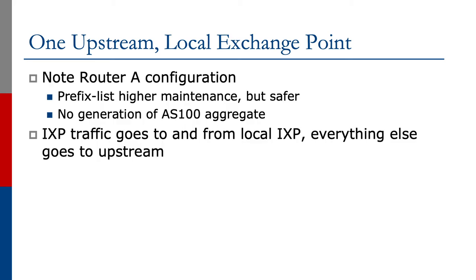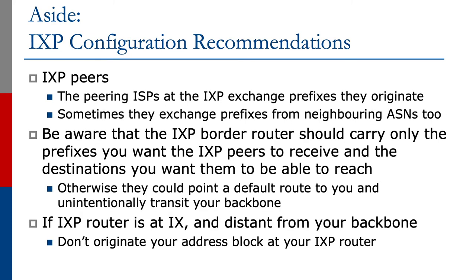To conclude, notice that the Router A configuration with a per-peer prefix list is higher maintenance, but it's safer. If a peer is going to introduce a new prefix, they will let all members of the Exchange Point know that they have a new address block, and everybody can update their filters. We also do not generate the aggregate for AS100 on Router A. The Exchange Point traffic goes to and from the local IXP; everything else goes to the upstream. Note that for IXP peers, the Exchange Point will only exchange prefixes they originate, and sometimes prefixes from neighboring ASes — usually their customers.